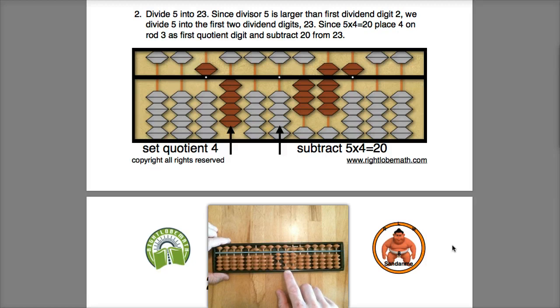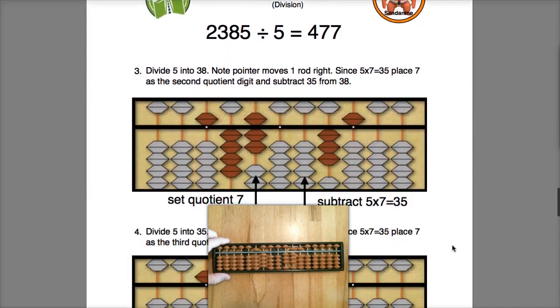All right, well 5 times 4 is 20, so I'm going to place 4 as my first quotient digit and I will subtract 20 from the Soroban with a remainder of 385 on the dividend, and then we just continue the process.